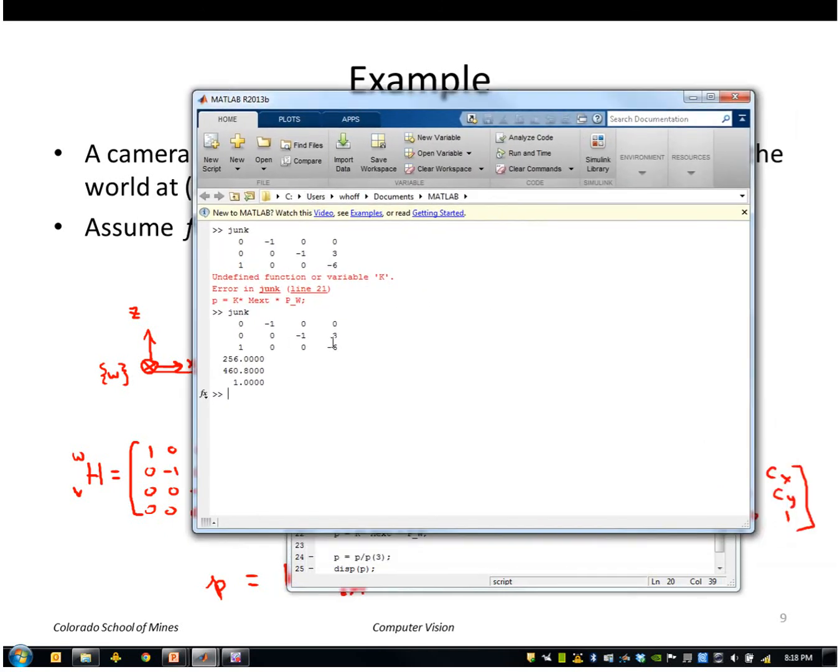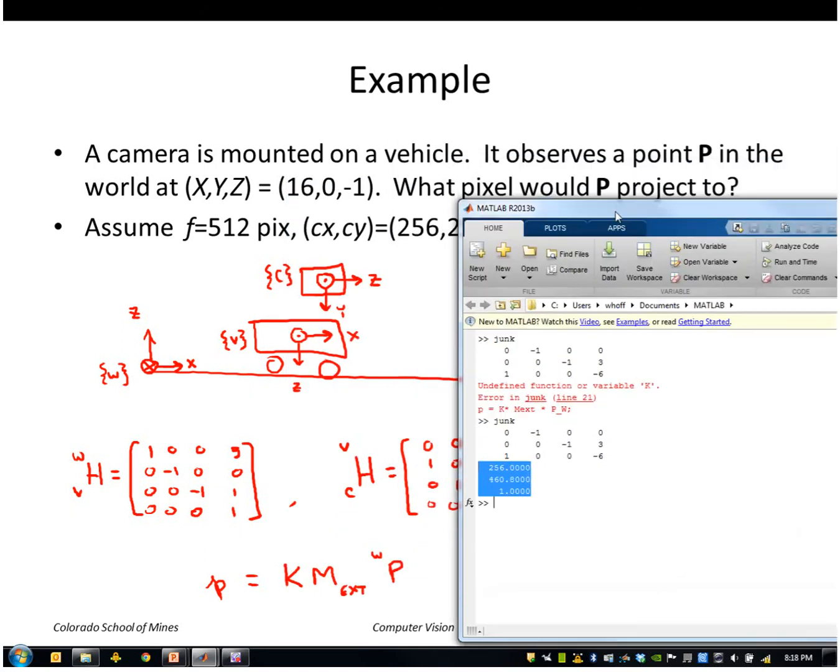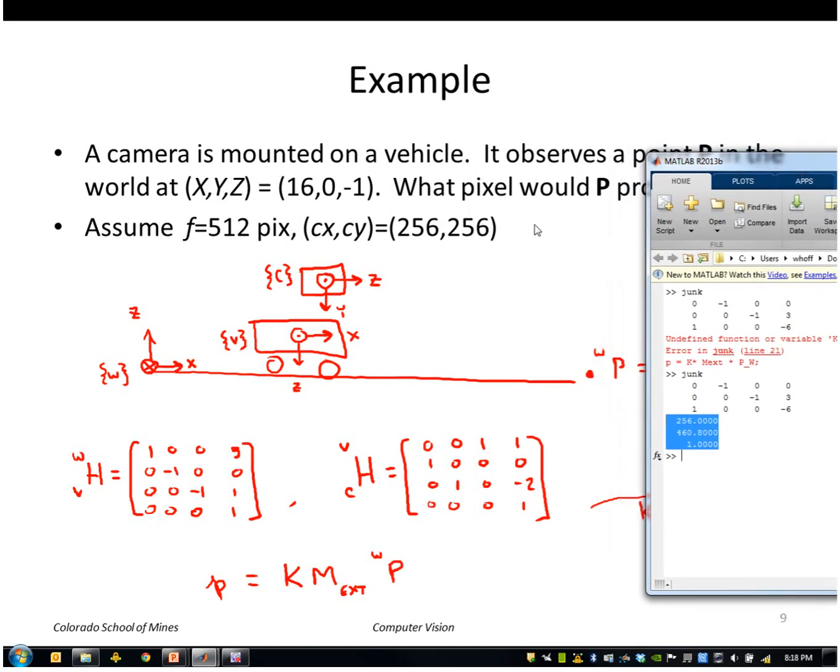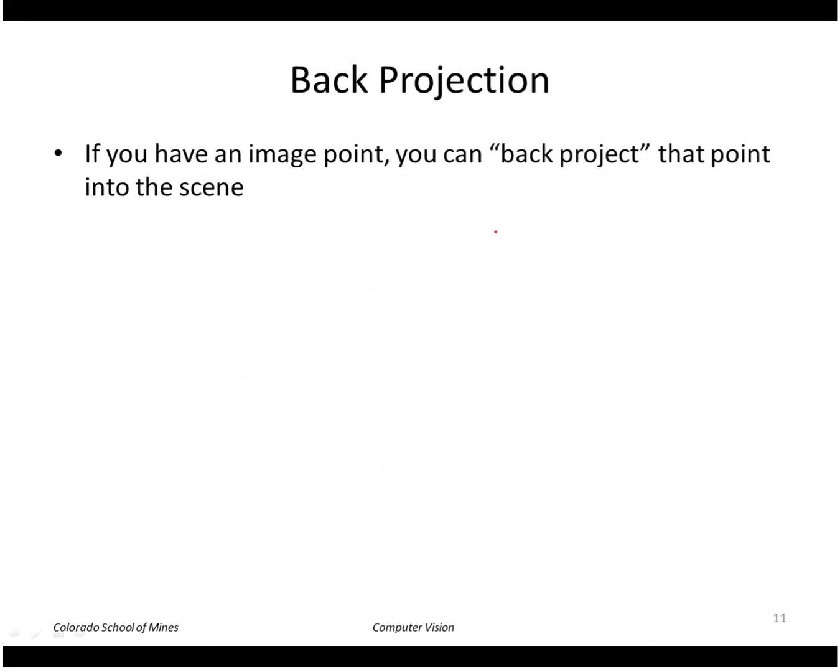So now we get, here's our extrinsic camera matrix, this 3 by 4. And here is our projected point. And that kind of makes sense if you look at it. The point is basically in the middle of the image. So that's the 256 from left to right. And it's in the lower part of the image, so it's 460, which is below 256.